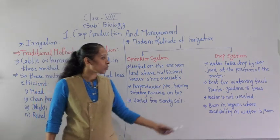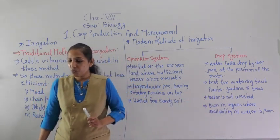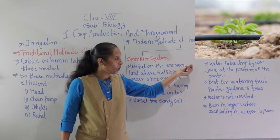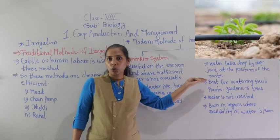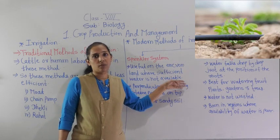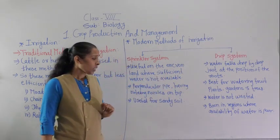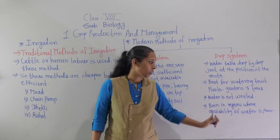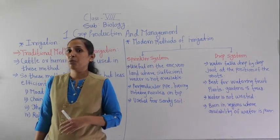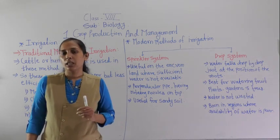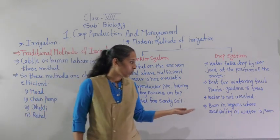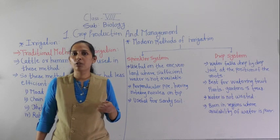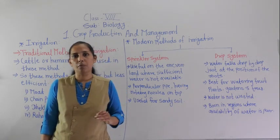In drip irrigation there is no wastage of water. The water is not wasted because, as you can see in the image, drop by drop water falls just at the position of the roots — exactly where it is necessary. This drip irrigation system is very important in regions where there is scarcity of water or where the availability of water is poor.